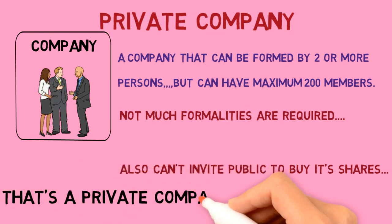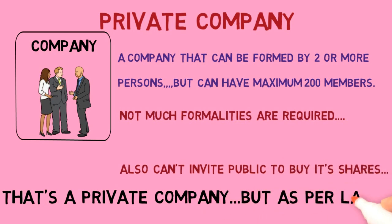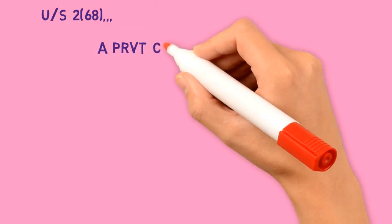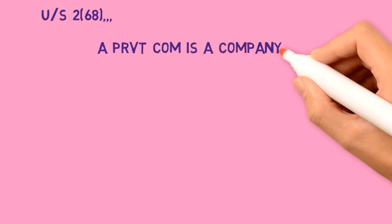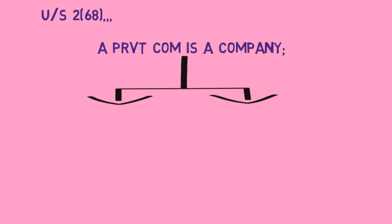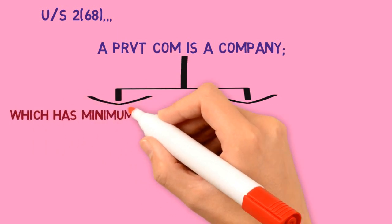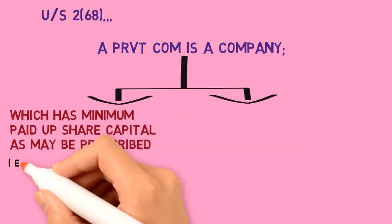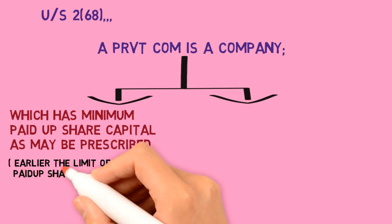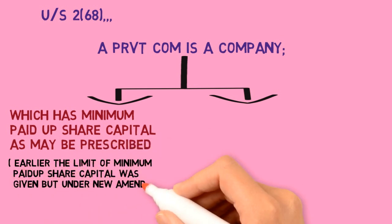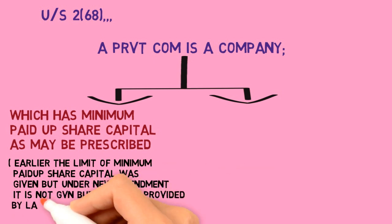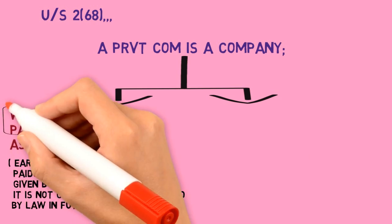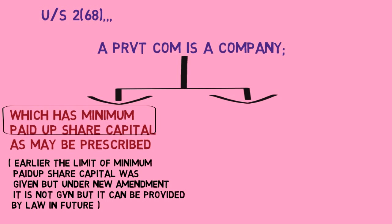As per law, under Section 2, subsection 68, a private company is a company which fulfills two conditions. First, which has minimum paid-up share capital as may be prescribed. Earlier the limit of minimum paid-up share capital was given, but under the new amendment such limit is not given, though it can be provided by law in future.